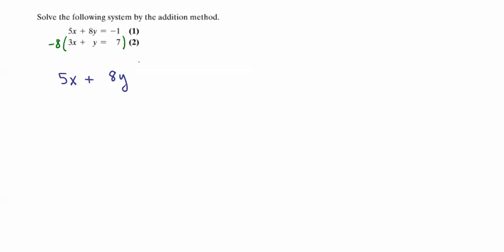Then we're going to multiply the negative 8 times 3x, which is negative 24x, minus 8 times y is minus 8y, and negative 8 times 7 is negative 56.